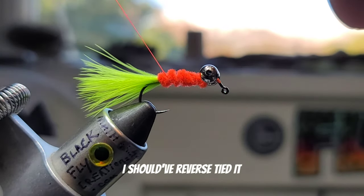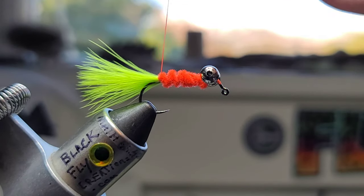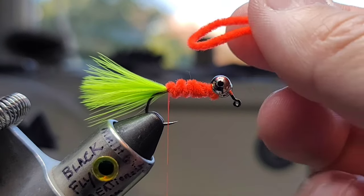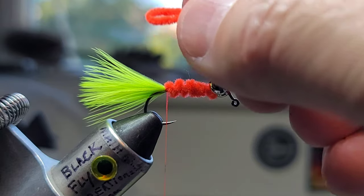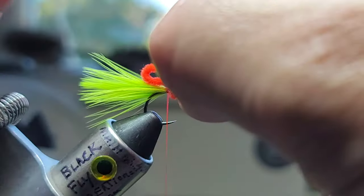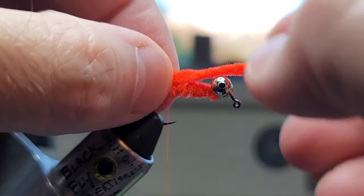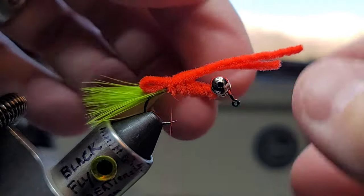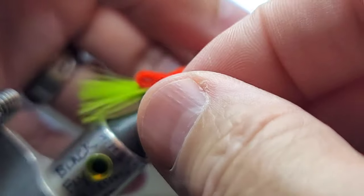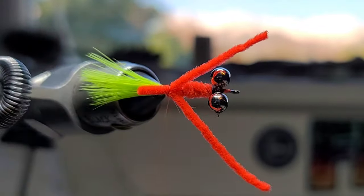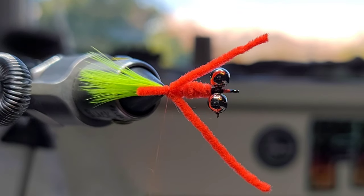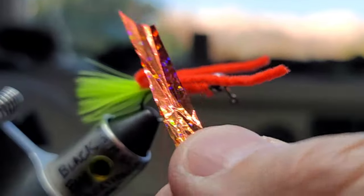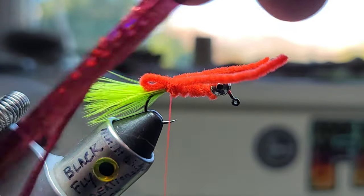We'll just tie that in, get a couple wraps in front and trim it. Now we're just gonna move our thread back to just where that marabou starts. Next we're going to grab another piece of chenille, just make a loop like that. I'm going to tie that in, separate them like this.